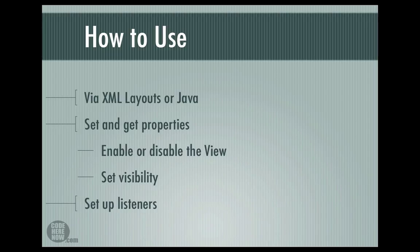You can also enable and disable a view — usually this is done with interactive views such as a button, image button, checkbox, or radio button, but it doesn't make much sense to enable or disable an image view. You can also set the visibility of the view — making them visible or invisible. All views can be made interactive by setting some sort of listener. So what we'll be doing is adding the view to the layout, setting and getting properties from XML or Java, and finally setting up listeners to handle user events. That is how we deal with views in Android.